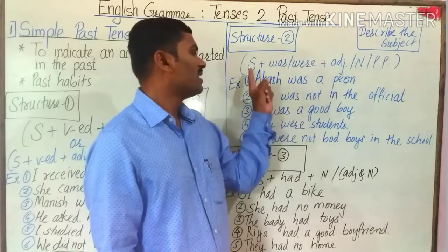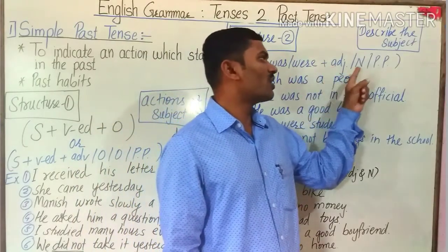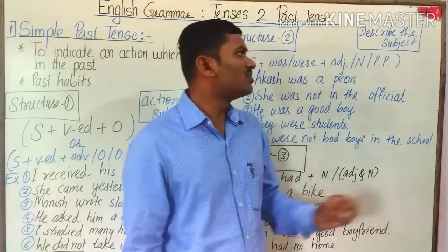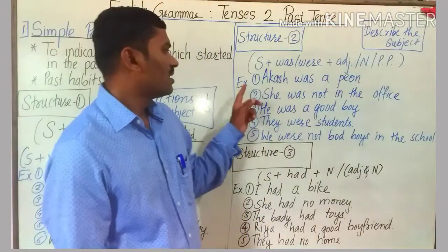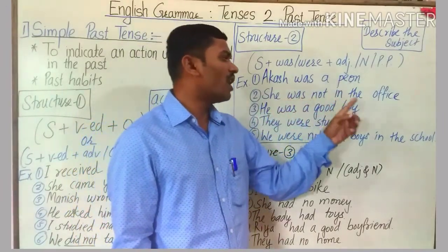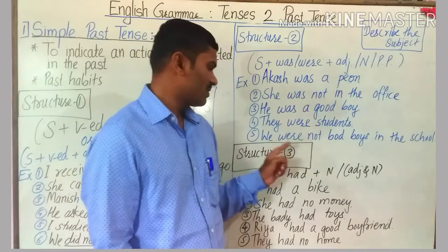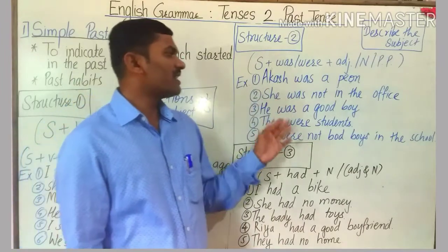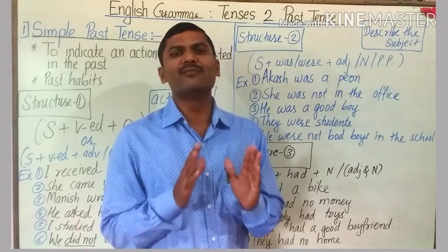The second formula to make sentences in simple past tense is: subject plus was/were (auxiliary) plus adjective or noun phrase. This structure is used to describe the subject or speak about the subject. Examples: 'Akash was a poet.' 'She was not in the office.' 'He was a good boy.' 'They were students.' 'We were not bad boys in the school.'